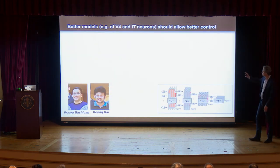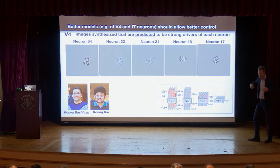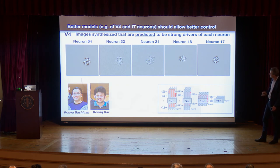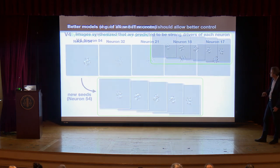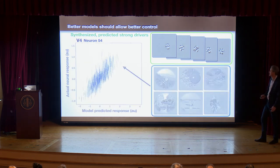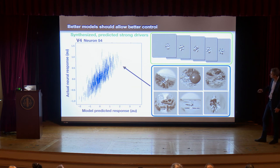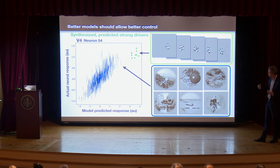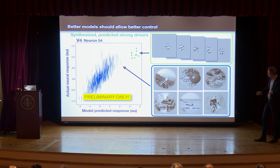You should be able to use these models to drive neurons better — to synthesize optimal stimuli. Here we're synthesizing best stimuli for different neurons in V4. When you repeat with new seeds, these synthesized images look visually very similar. Our goal was to drive this neuron better than we'd ever seen it driven before. The predicted images that drive it were actually way up near the high end of the neuron's response range — suggesting these models are really on to something. This is preliminary, unpublished work.